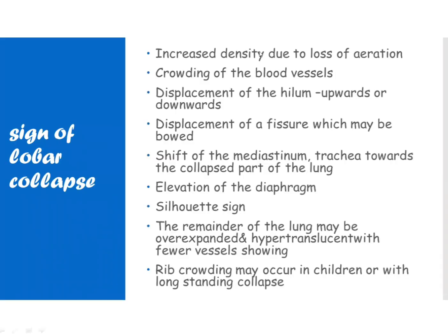What are the signs of lobar collapse? Increased density due to loss of aeration, crowding of the blood vessels, displacement of the hilum upwards or downwards, displacement of a fissure which may be bowed, shifts of the mediastinum and trachea towards the collapsed part of the lung, elevation of the diaphragm, silhouette sign. The remainder of the lung may be over-expanded and hyper-translucent with fewer vessels showing, and rib crowding may occur in children or with long-standing collapse.